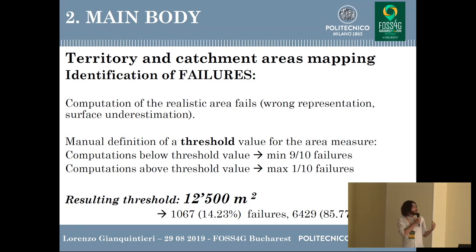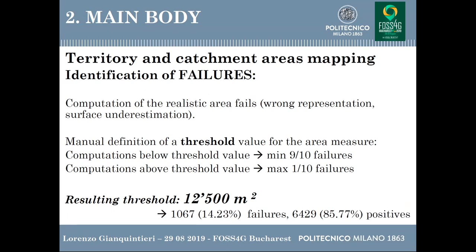We tried to identify all the failures — cases in which the realistic area does not represent the actual catchment area of the device, meaning it is undersized or even zero. We set a threshold value for the area such that below this threshold at least 9 out of 10 cases are failures, and above it at most 1 out of 10 are failures. With this approach, we identified a threshold of 12,500 square meters, obtaining two datasets: 1,066 failures and 6,429 positives where the catchment area was computed correctly.